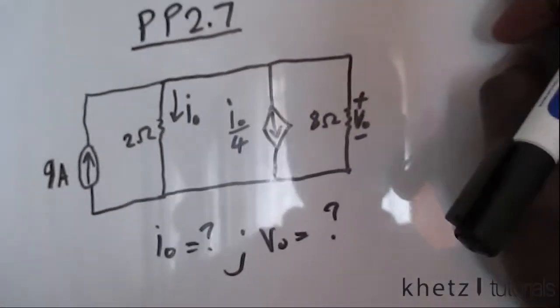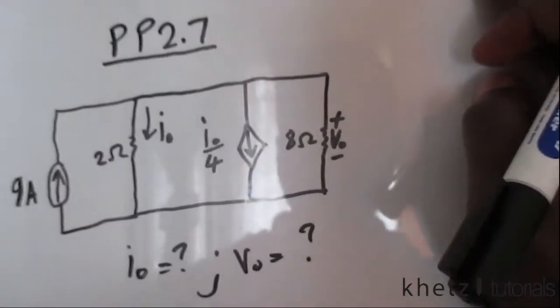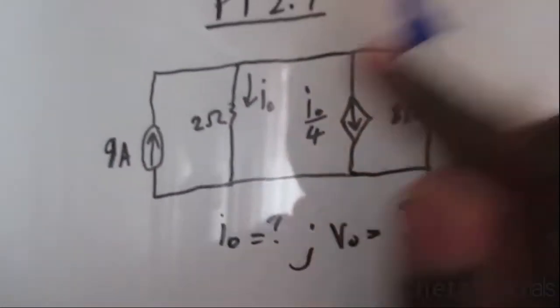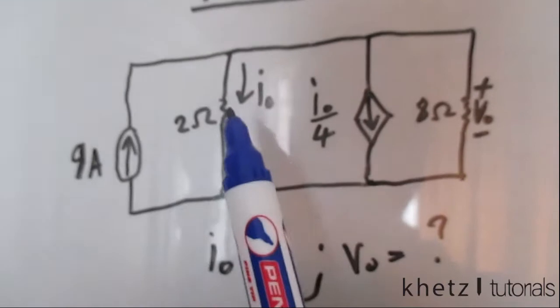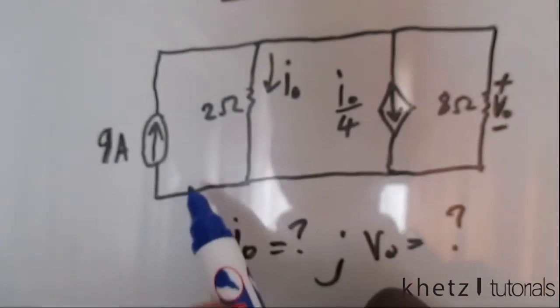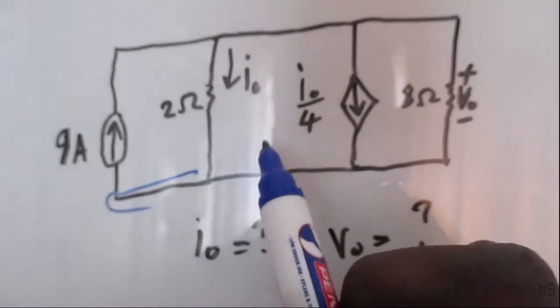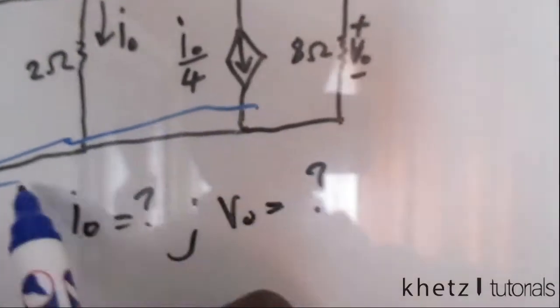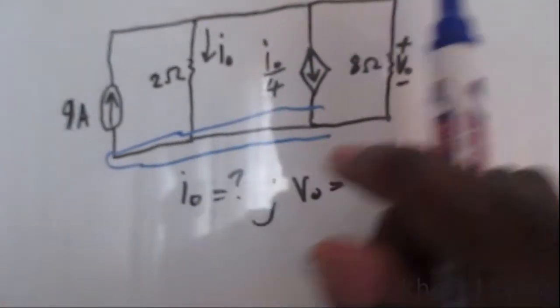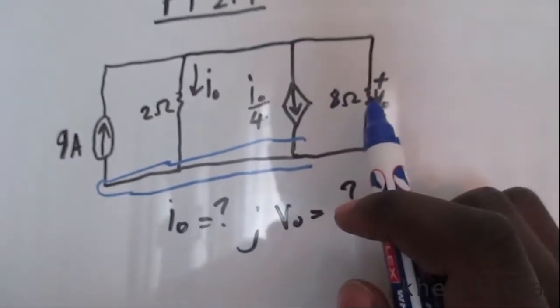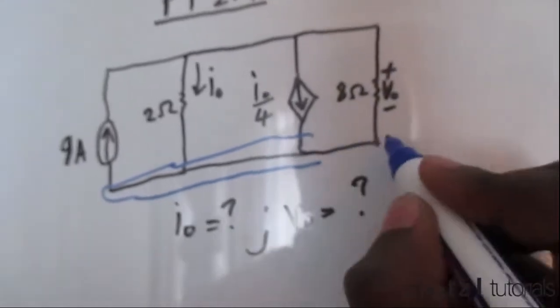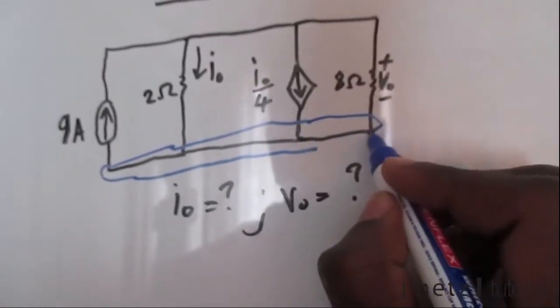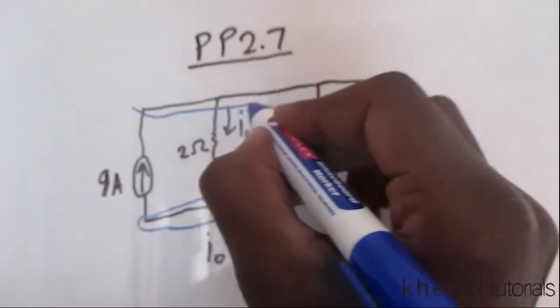If you look at the circuit we have two nodes. Between this branch or element and this element there's no other element here, so this forms a node. Again between these two there's no element, so that becomes one node as well. But if we look at these two other elements, this is also a node because there's no element in between. So this whole thing here is a node and this whole thing at the top is also a node.